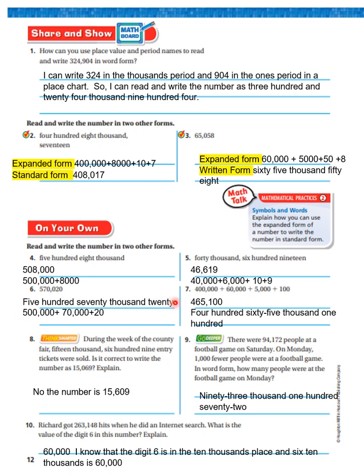Number seven: 400,000 plus 60,000 plus 5,000 plus 100 is in expanded form. In standard form: four hundred sixty-five thousand one hundred. In word form: four hundred sixty-five thousand one hundred. Number eight: fifteen thousand six hundred and ninety entry tickets were sold. Is it correct to write the number as fifteen thousand sixty-nine? No — the number is fifteen thousand six hundred and nine, not sixty-nine.